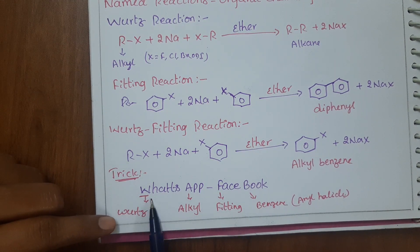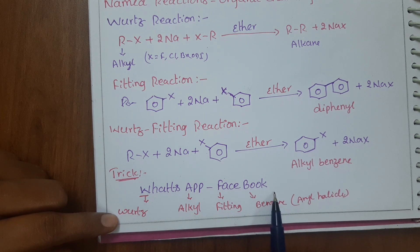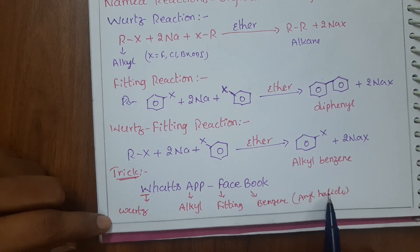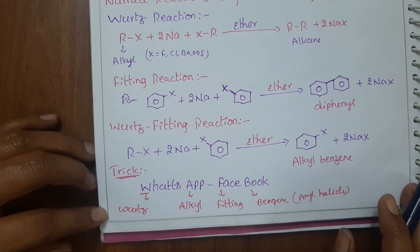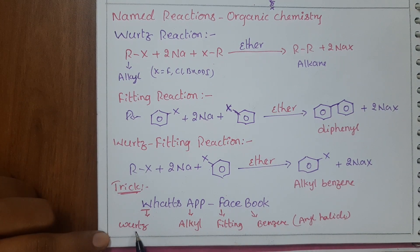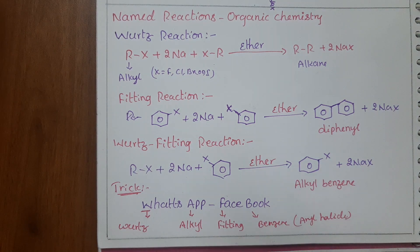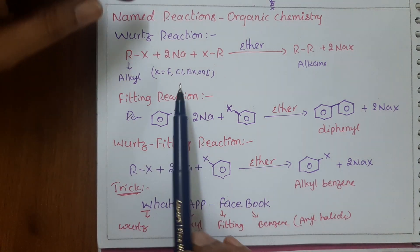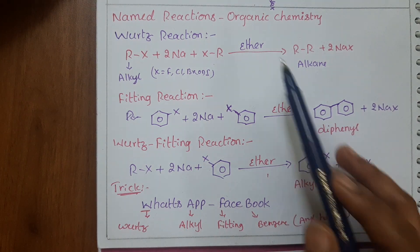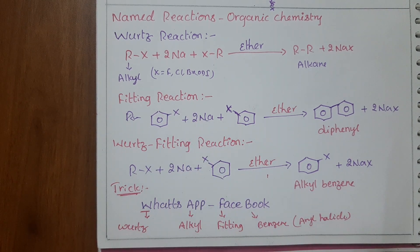So to recap the trick: WhatsApp — Wurtz reaction, take alkyl halide. Facebook — Fittig reaction, take aryl halide. Wurtz-Fittig — combine both alkyl halide and aryl halide. The reaction condition is the same for all three: they take place in the presence of dry ether with sodium metal.